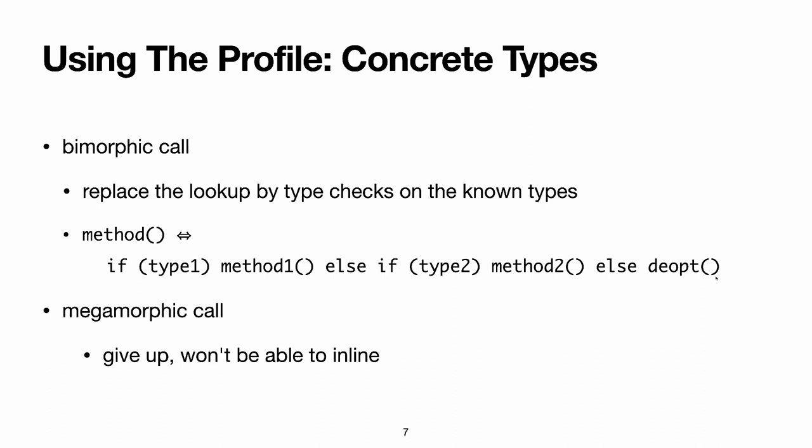You can do this for more than two types, but as the number of types increases, the benefits start dropping fast, because you're generating too much code and that pollutes the cache. So like we said, when you encounter a megamorphic call, you just don't do anything, and you won't be able to inline the methods.